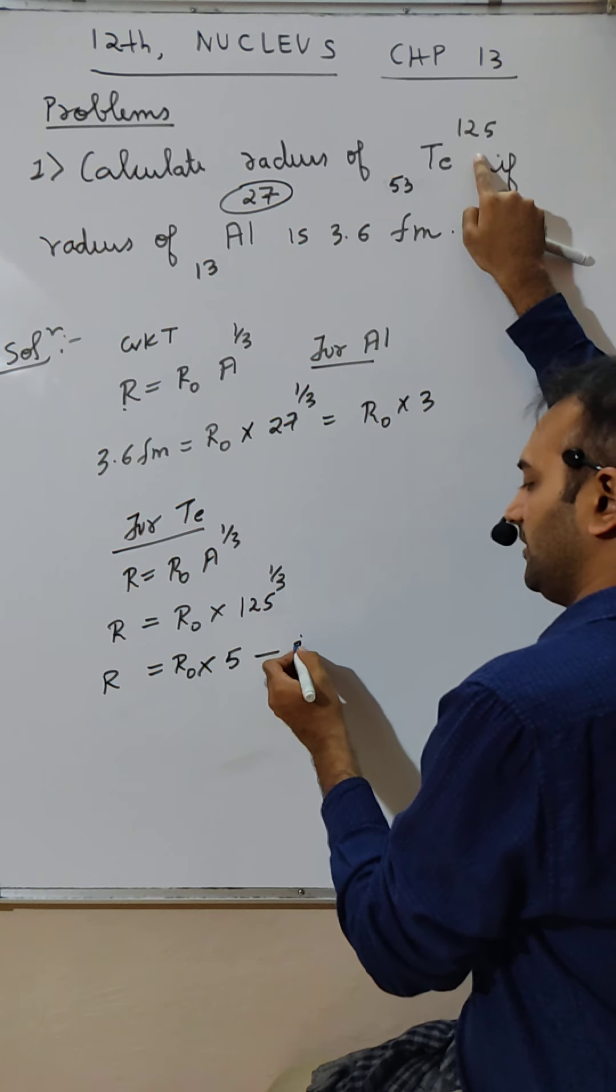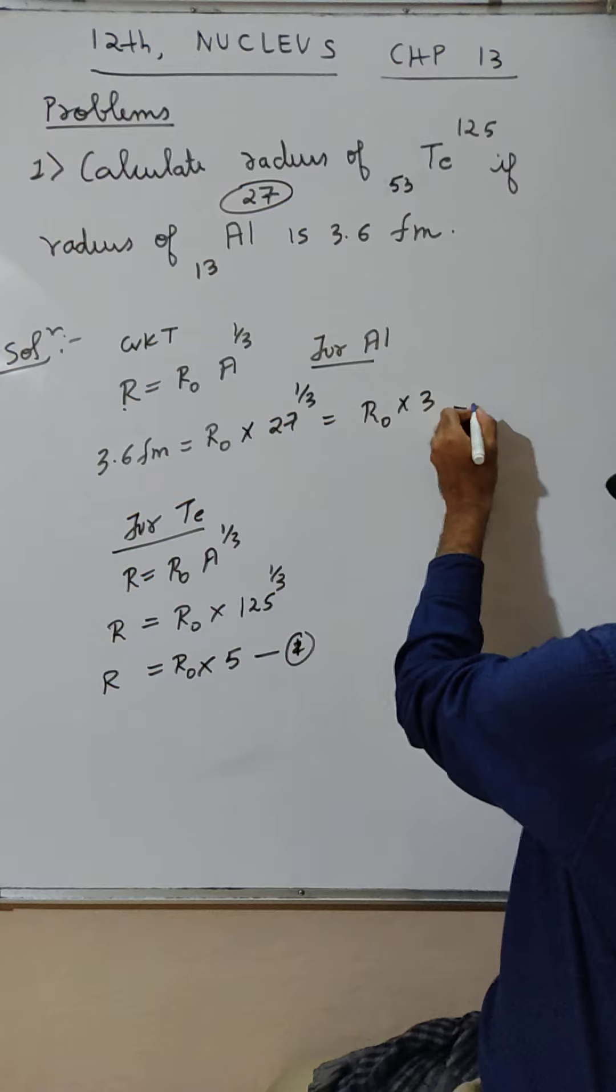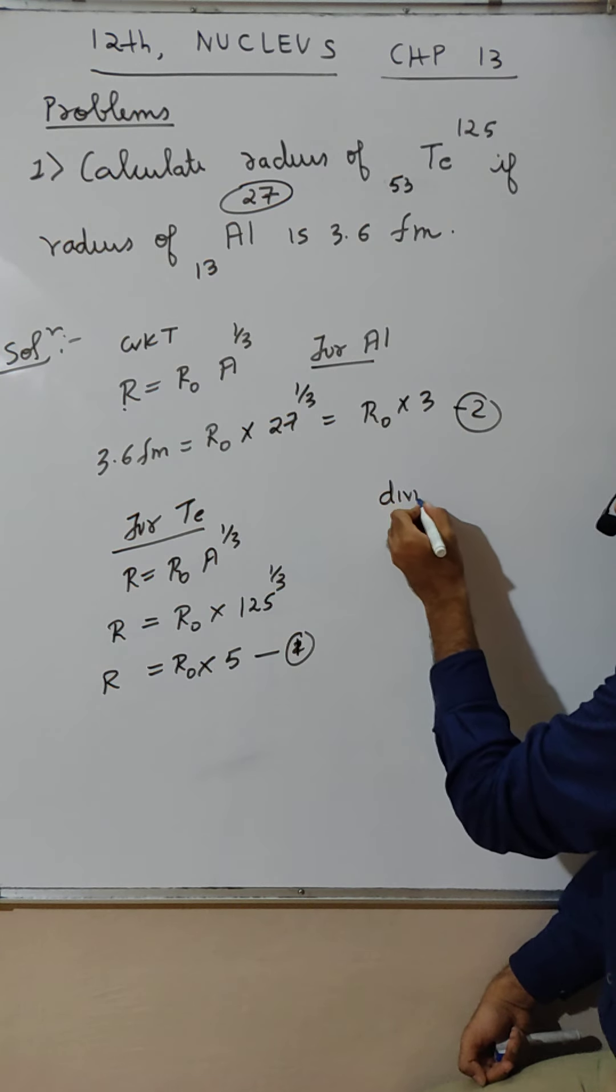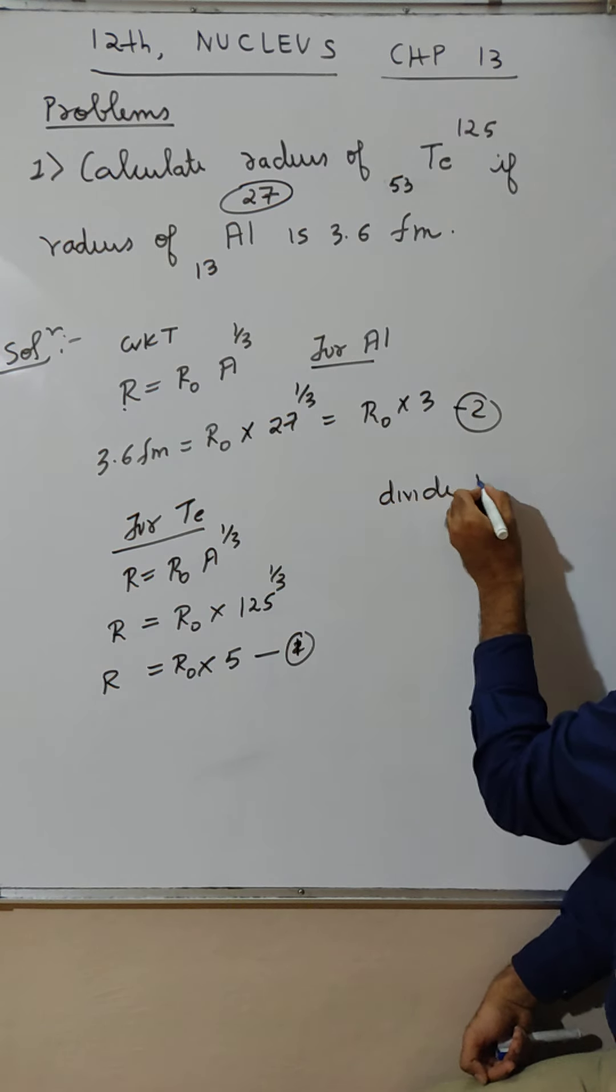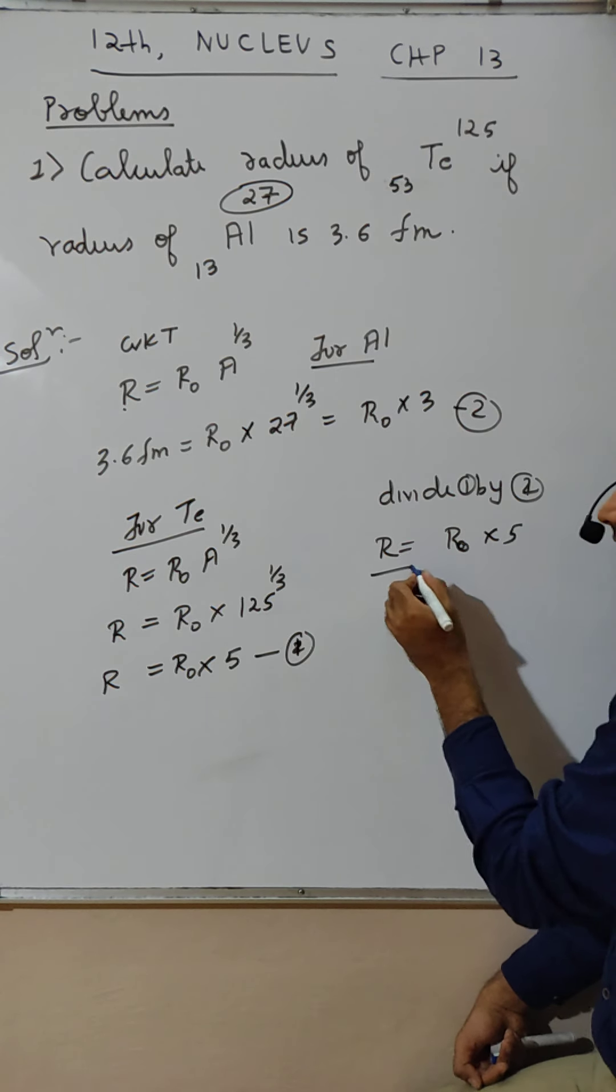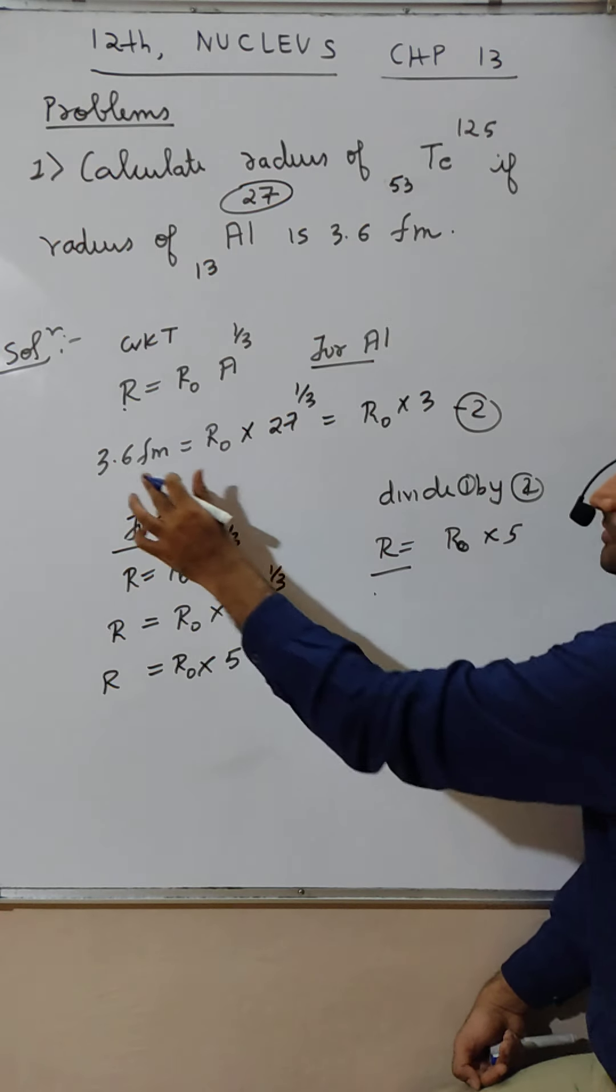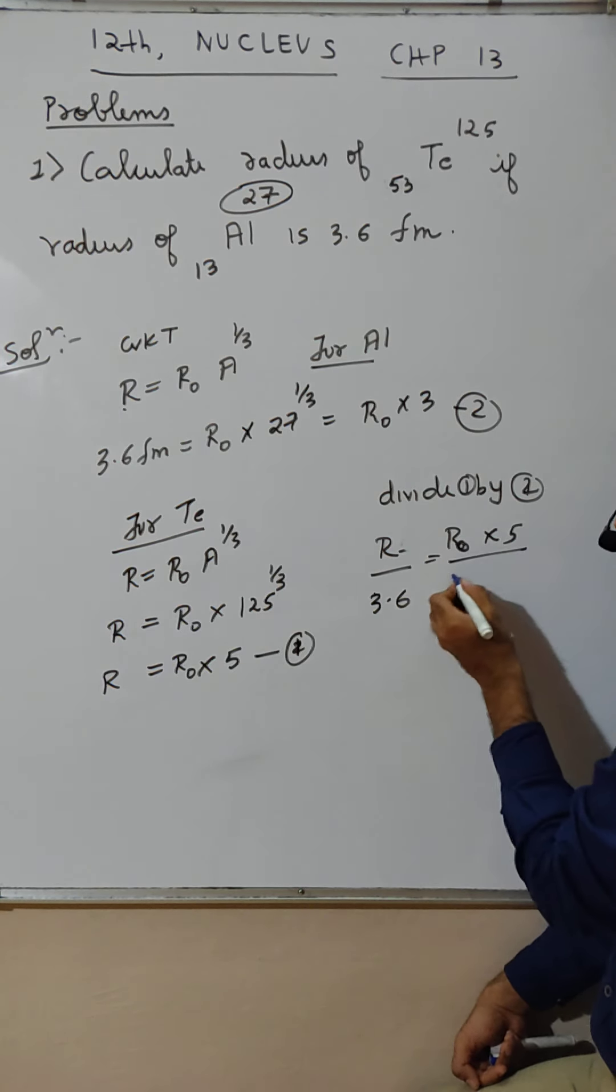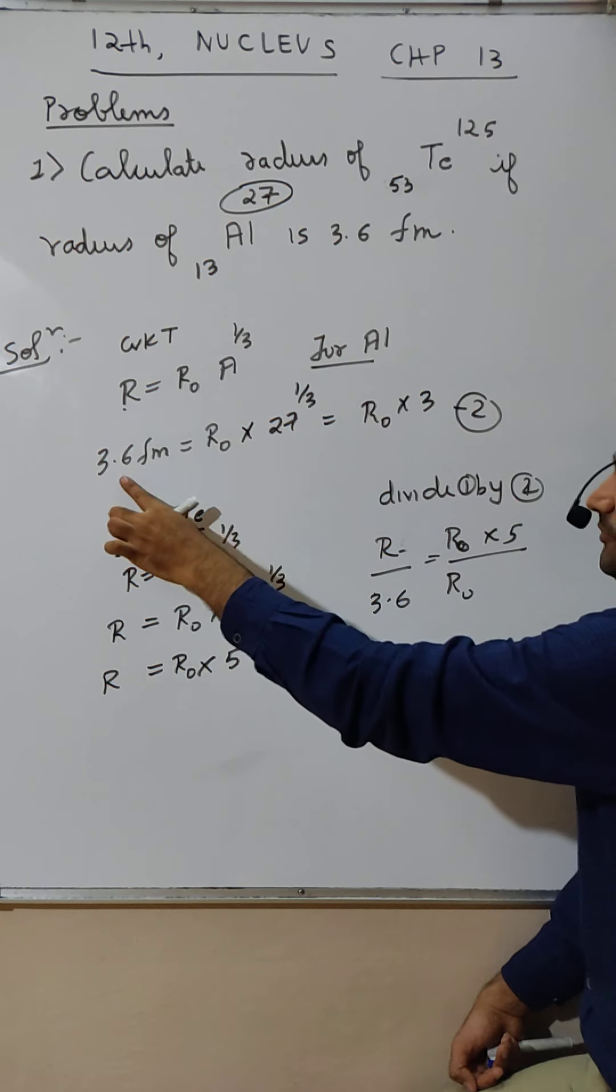Equation number 1, equation number 2. Divide 2 by 1, divide 1 by 2. R is equal to R₀/5, and here 3.6 divided by R₀ times 3.